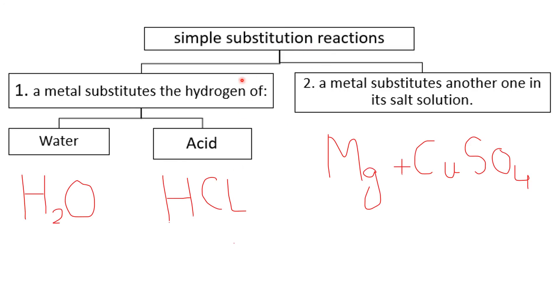Simple substitution reactions are classified into: a metal substitutes the hydrogen of water and acid. Hydrogen is found in water H2O and in acids like HCl, H2SO4, HNO3. Metal substitutes another metal in salt solution. For example, magnesium is more active than copper, so it can replace copper to produce magnesium sulfate. Simple substitution reaction: metal substitutes hydrogen or substitutes another metal.